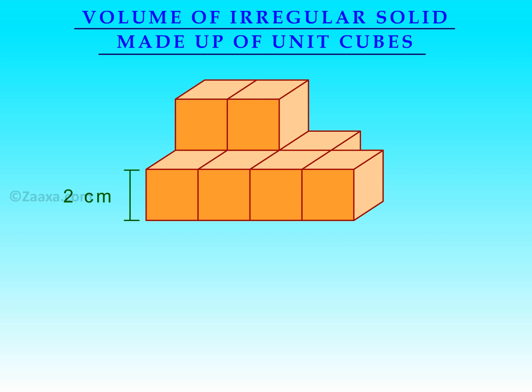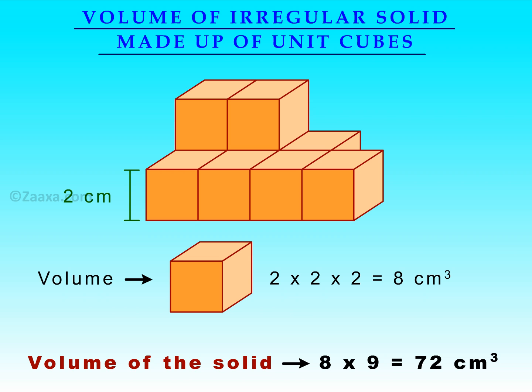Since the edge of each cube is two centimetres, the volume of each cube is eight centimetre cube. The solid shown is made up of nine unit cubes. Therefore, the volume of the solid is eight multiplied by nine, which is equal to 72 centimetre cube.